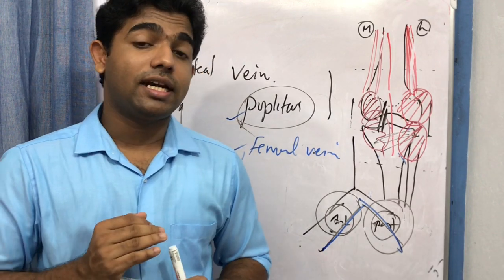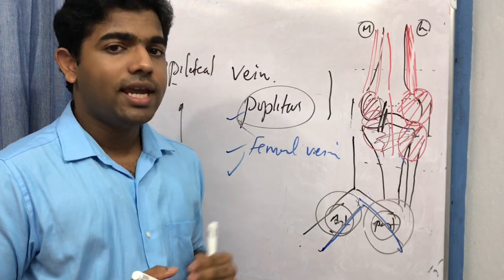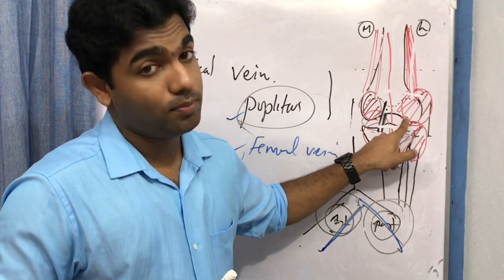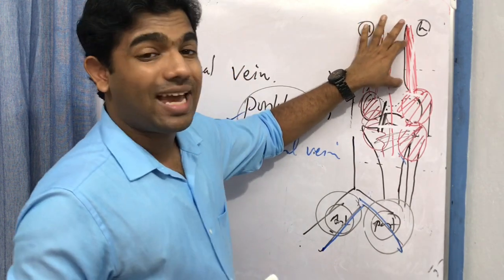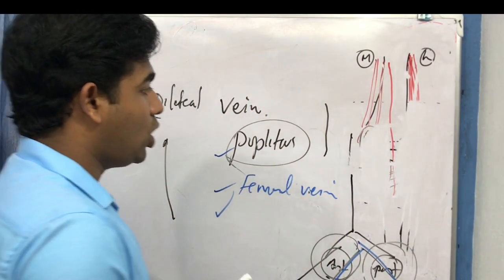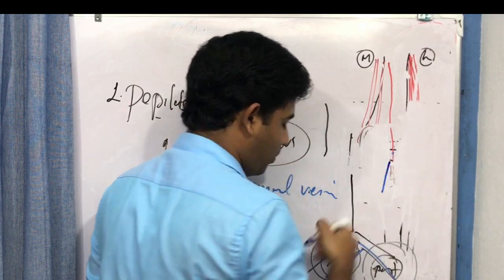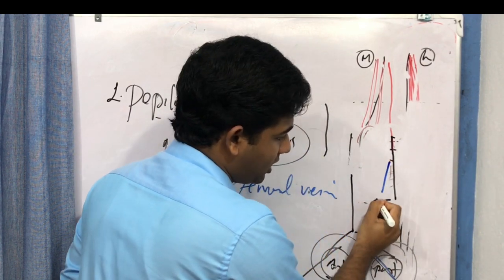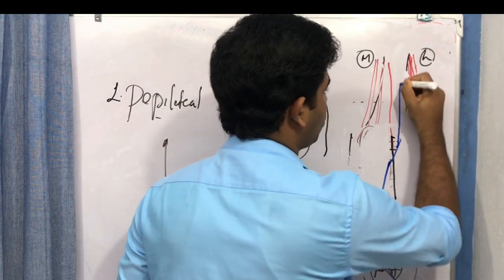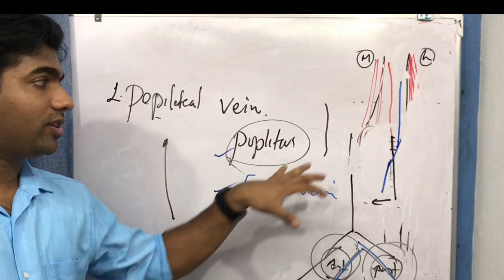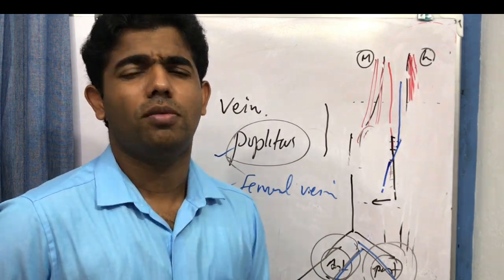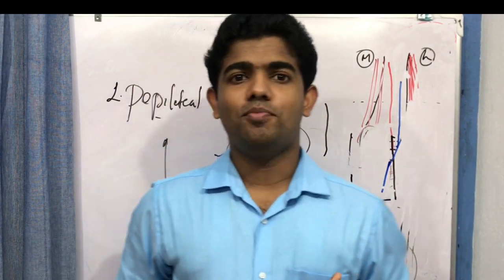The position of the popliteal vein relative to the popliteal artery changes at different levels: in the lower part of the popliteal fossa it is medial to the popliteal artery; in the middle part it is posterior to the popliteal artery; and in the upper part it becomes lateral (posterolateral) to the popliteal artery. It crosses the artery as it ascends.